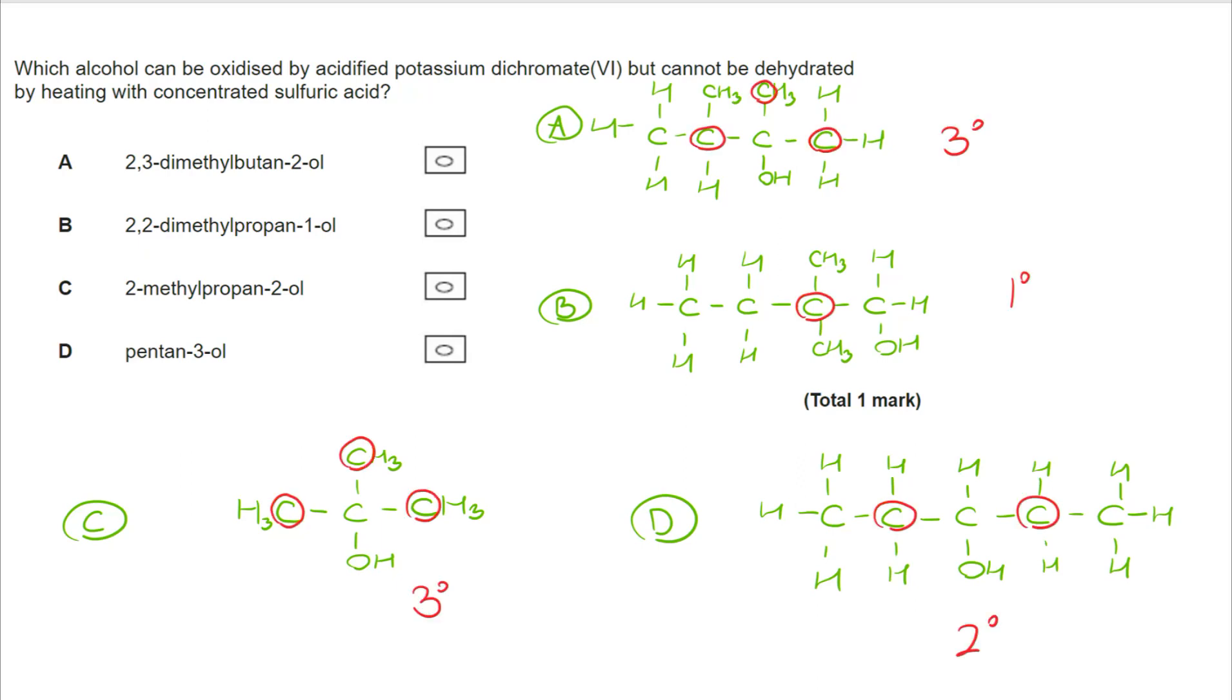I can see A and C are both tertiary. The carbon that the OH is bonded to has three carbons connected to it. B is a primary alcohol, and D is a secondary alcohol. If I consider which can be oxidized by acidified potassium dichromate 6, that dismisses the tertiary alcohols. They cannot be oxidized. Primary can be oxidized to an aldehyde. Secondary can be oxidized to a ketone.